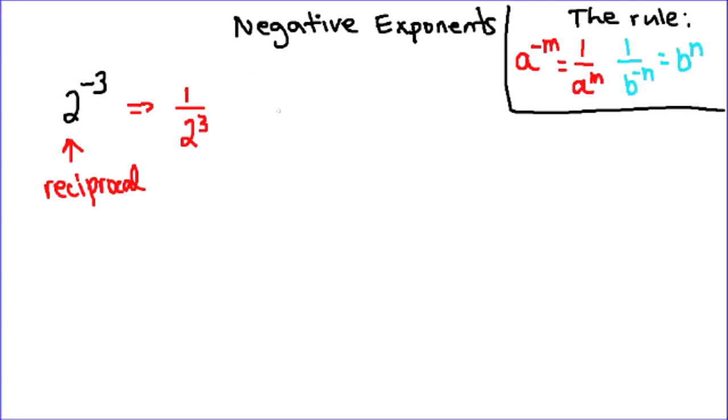So here's another example where we'll take 3 to the power of negative 2. And once again the reciprocal of 3 is 1 third and that negative becomes a positive. So 1 over 3 squared, which is also equal to 1 over 9.